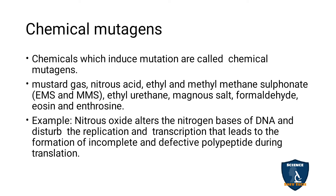Chemical mutagens are chemicals that induce mutation in organisms. Examples include mustard gas, nitrous acid, ethyl methane sulfonate (EMS), methyl methane sulfonate (MMS), ethyl urethane, manganese salt, formaldehyde, eosin, and erythrosin. These are the chemicals that cause mutation in organisms.